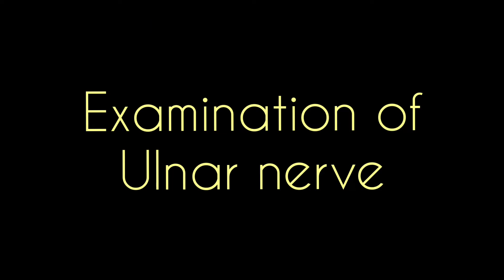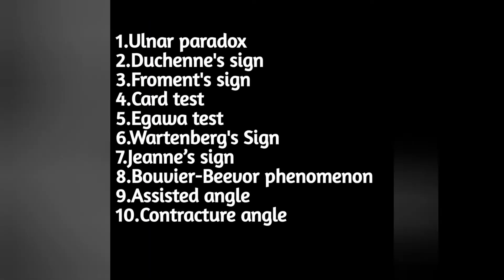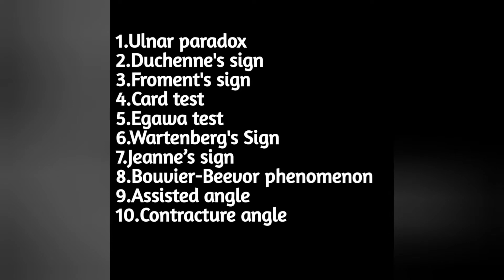Today we will discuss the examination of the ulnar nerve and a few specific signs. The important terms are: ulnar paradox, Duchenne sign, Froment sign, card test, Igawa test, Wartenberg sign, Jeanne sign, Bouvier phenomenon, assisted angle, and contracture angle.